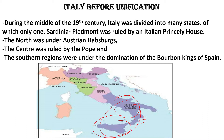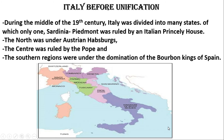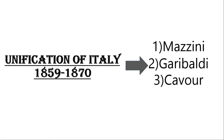So Italy was divided into major parts, and through the feeling of nationalism, Italy's unification was made possible. In this unification, we will discuss what is described in the CBSE Class 10 history book — the three key figures: first, Mazzini; second, Garibaldi; and third, Cavour. In the next slide, we will discuss the details about each of them.